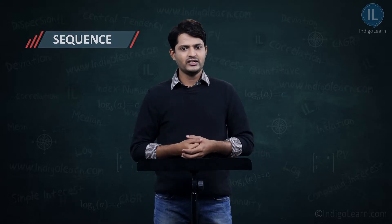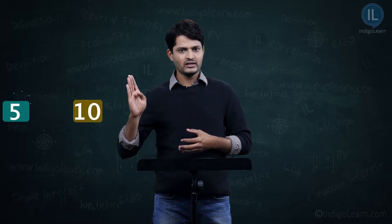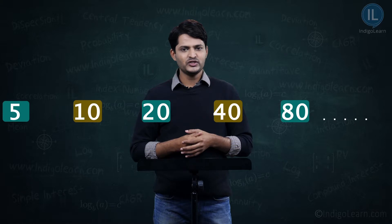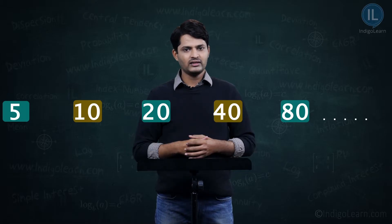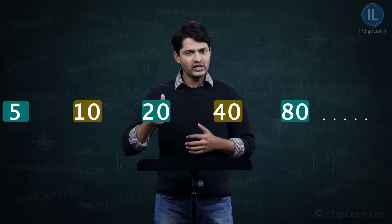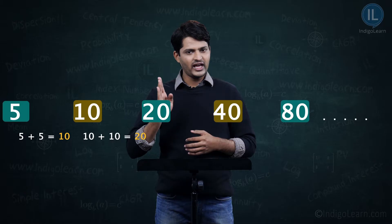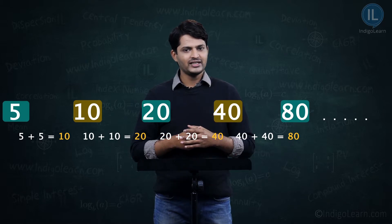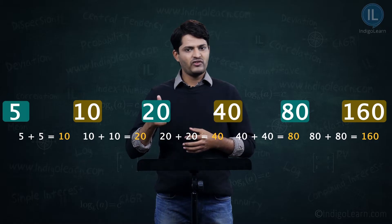Now let's look at a pattern that is slightly different: 5, 10, 20, 40, 80, and so on. Here the numbers do not follow the previous kind of pattern. Instead, every number is double the previous one. So 5 is followed by 10, which is double of 5; 10 is followed by 20; 20 by 40; and the next term after 80 is 160, and so on. These numbers also follow a specific pattern.